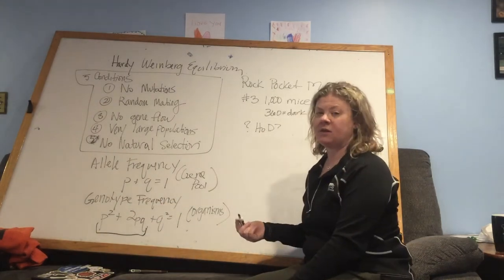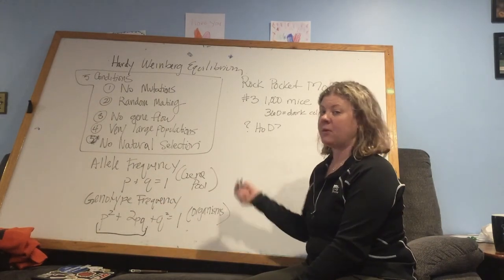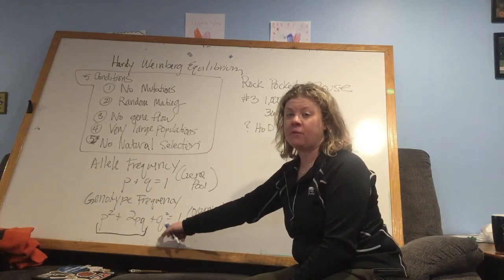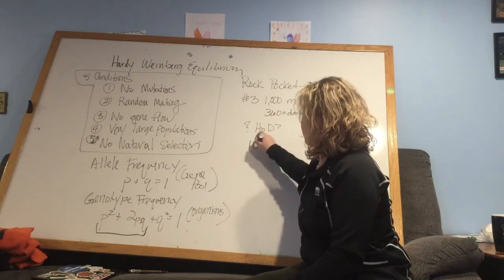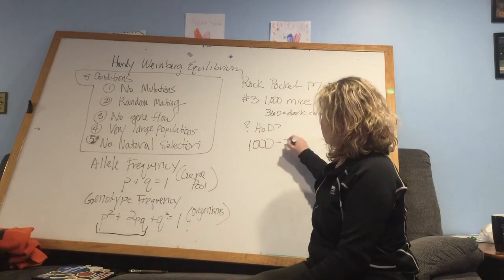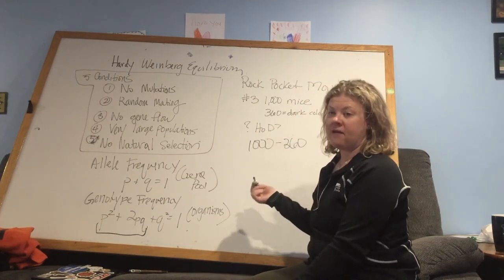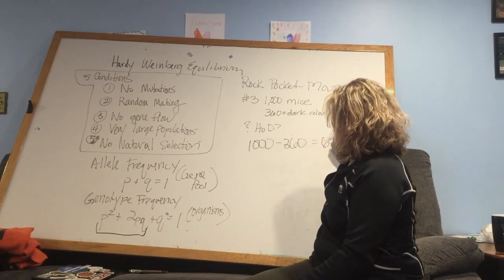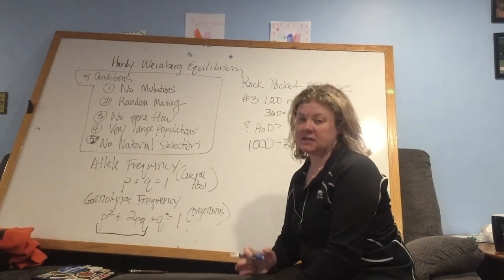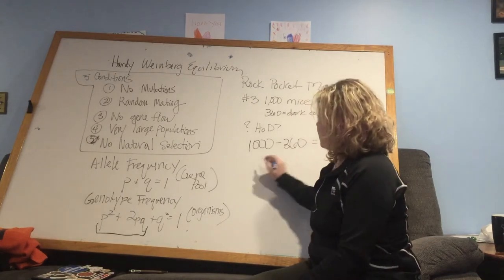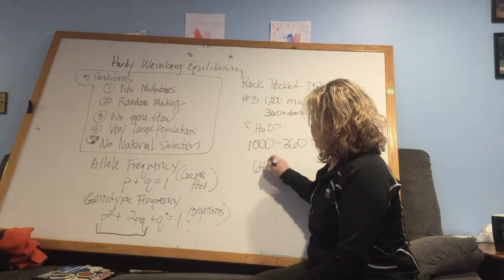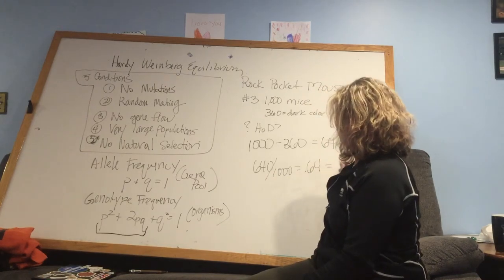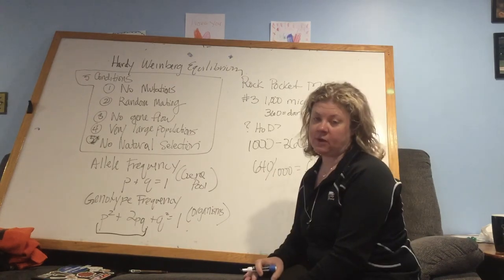But what I can do is figure out how many individuals are homozygous recessive. So if I work it backwards and say I have a thousand mice, 360 of them have that dark phenotype that is dominant. That means 640 of them are displaying that recessive phenotype. So by taking that 640 out of a thousand and getting 0.64, this is going to equal my Q squared.